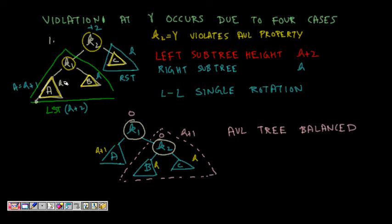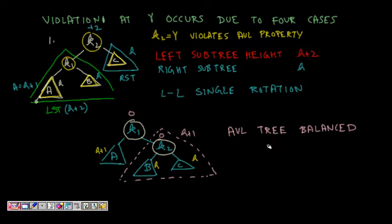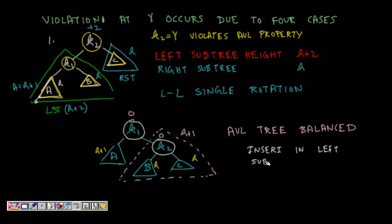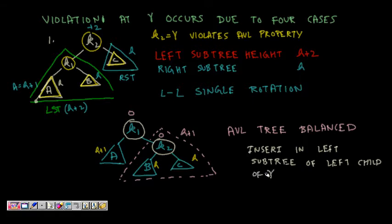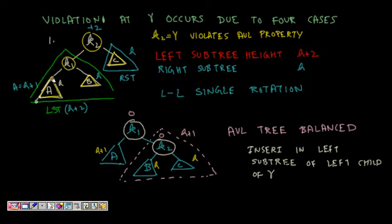If the initial height of A was h, then the left subtree height of k2 is h+1 and it is balanced. But if we insert something else into A, its height becomes h+1, making the total left subtree height of k2 equal to h+2, while the right subtree remains h — a difference of two. This is an LL case: insertion in the left subtree of the left child of gamma.